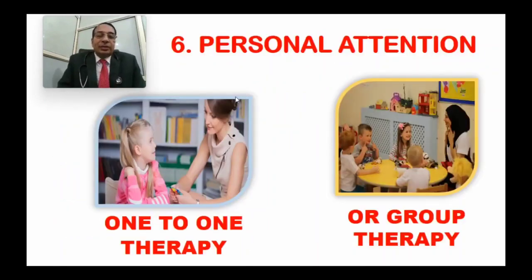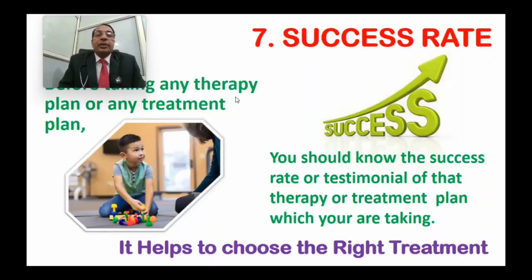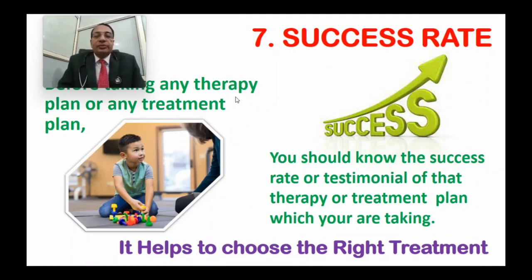Next is personal attention. The child should be given one-to-one therapy rather than only group therapy, as personal attention is important. Then consider the success rate — if you are starting any treatment or therapy, you should know its success rate through Google reviews, ratings, social media reviews, or testimonials. This will help you choose the right treatment.